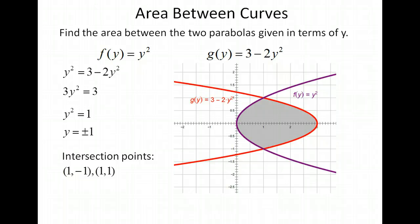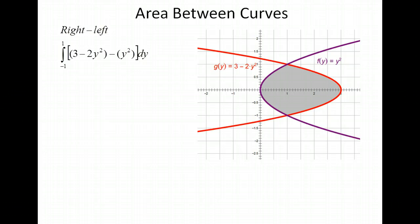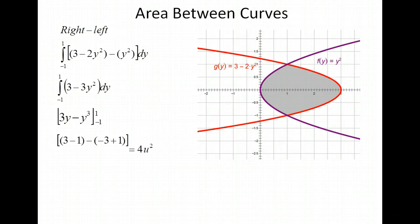If you have y squared, that means you have a vertex at 0, 0 and it opens to the right. If you have a negative in front of your y squared, it's going to open to the left. And we know if we have 3 minus 2y squared, we have a vertex at 3, 0. So graphing these is pretty easy to do. Let's go ahead and do our integration. With these, we're going to do right minus left — so we have our right function, which was the g of y function, minus the f of y function, then simplify. Integrating gives us 3y minus y cubed, and we evaluate from negative 1 to 1, plugging in our two values. We end up with 4 units squared for this area.